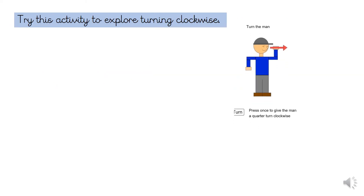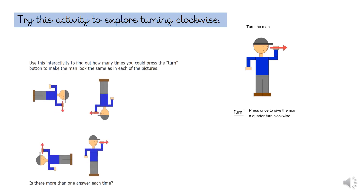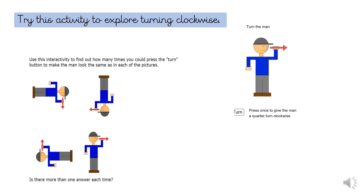Look at this man. Your task today is to investigate how many turns are needed to make the man face the different directions. Remember, you're going to need to use language like clockwise, anti-clockwise and give quarter turns. Use the link provided to start the activity.